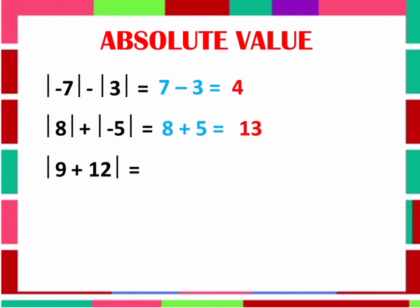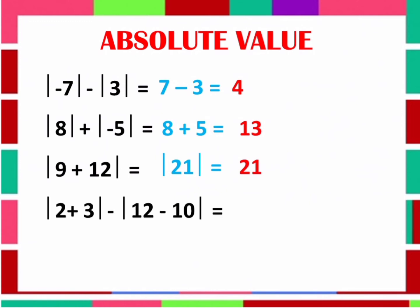How about this one? The Absolute Value of 9 plus 12. Before getting the Absolute Value, perform the operation inside first. So 9 plus 12 is equal to 21, and the Absolute Value of 21 is equal to 21. Next example: the Absolute Value of 2 plus 3 minus the Absolute Value of 12 minus 10. Perform the operations inside first: 2 plus 3 is 5, and 12 minus 10 is 2. Then the Absolute Value of 5 is 5, and the Absolute Value of 2 is 2. So 5 minus 2 is equal to 3.